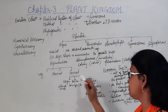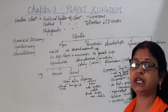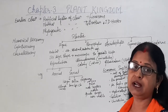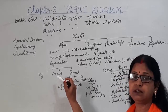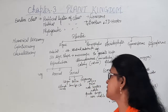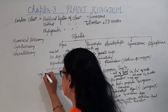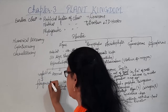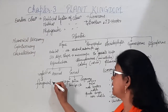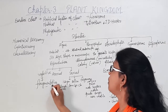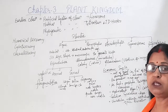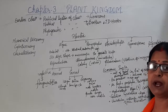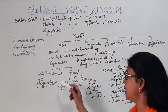Algae exhibit three types of reproduction. Vegetative reproduction occurs through fragmentation, where the plant body breaks down into small fragments and each fragment develops into a new individual plant.